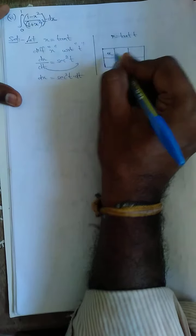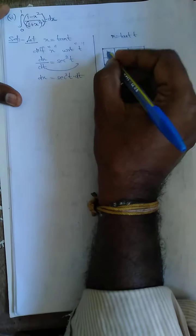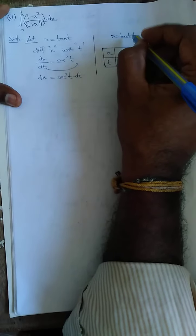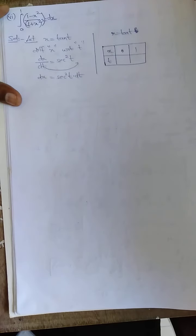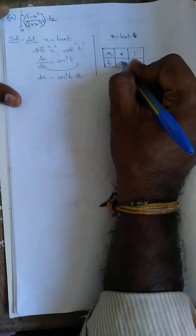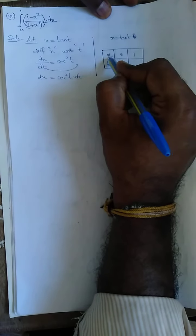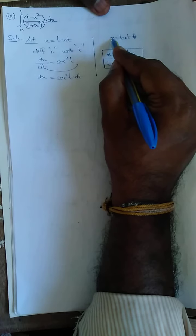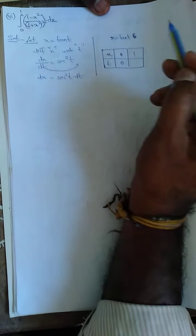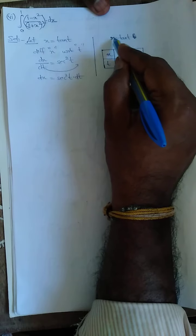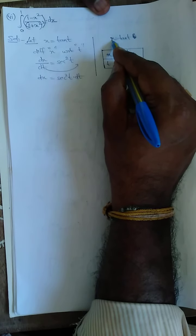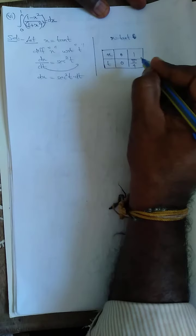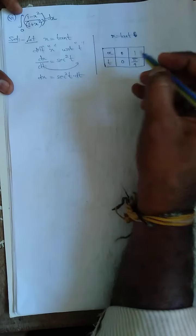This is the x limit; now the t limit. What is x? 0 and 1. If x is 0, tan t is also 0. Put x equal to 0: tan t = 0, so t is equal to 0. When x is equal to 1, put 1 into tan: then t equals pi by 4. So the new limits are 0 to pi by 4.